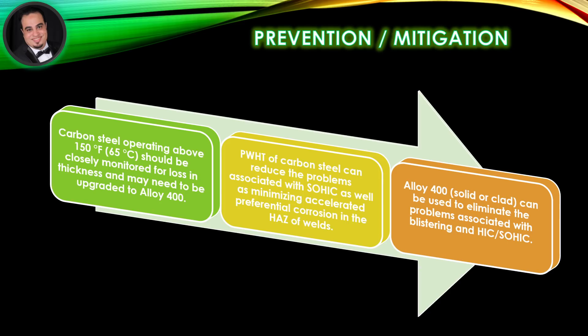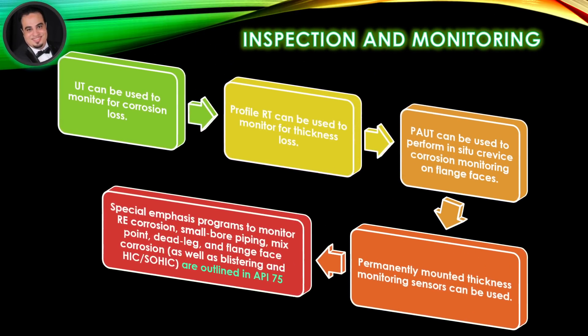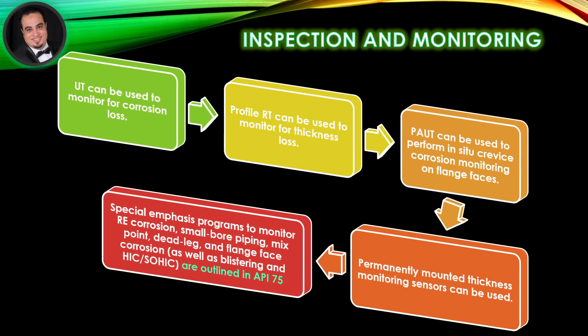Alloy 400, solid or clad, can be used to eliminate the problems associated with blistering, hydrogen-induced cracking, and stress-oriented hydrogen-induced cracking, and also to reduce corrosion loss. Profile RT can be used to monitor for thickness loss. PAUT can be used to perform in situ crevice corrosion monitoring on flange faces. Permanently mounted thickness monitoring sensors can also be used.